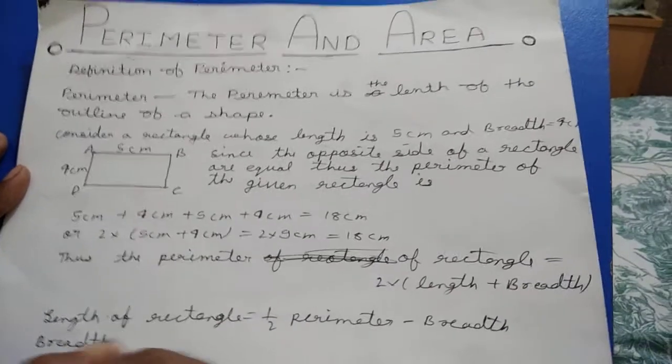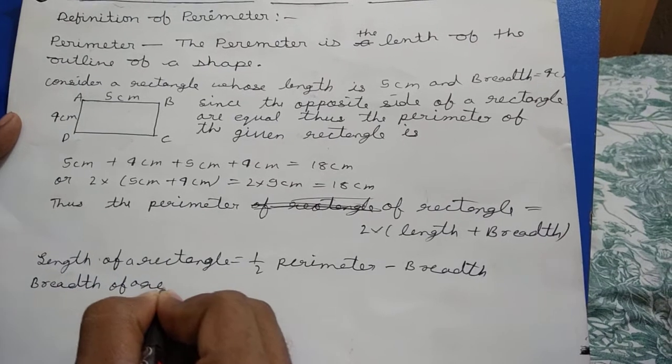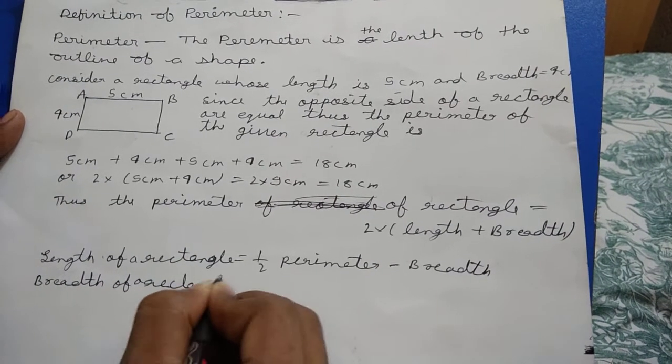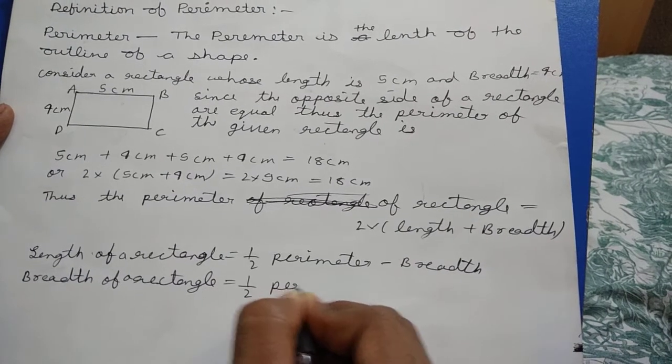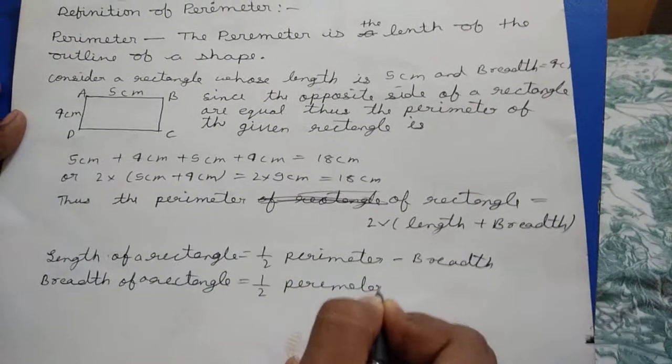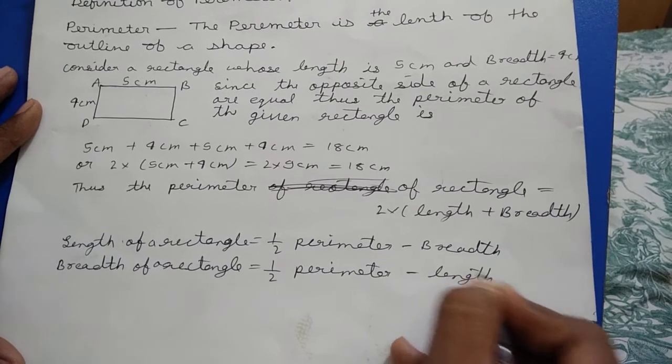And breadth of rectangle is equal to half of perimeter minus length.